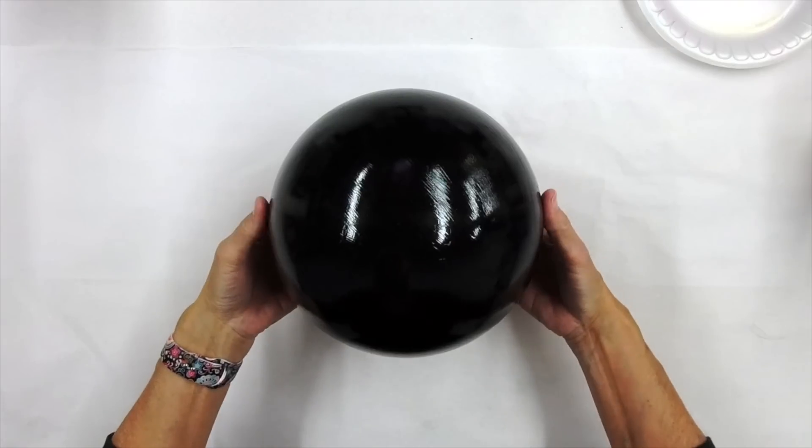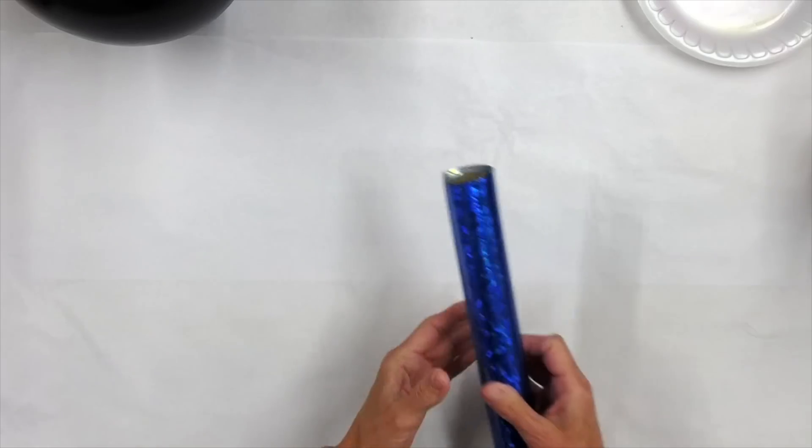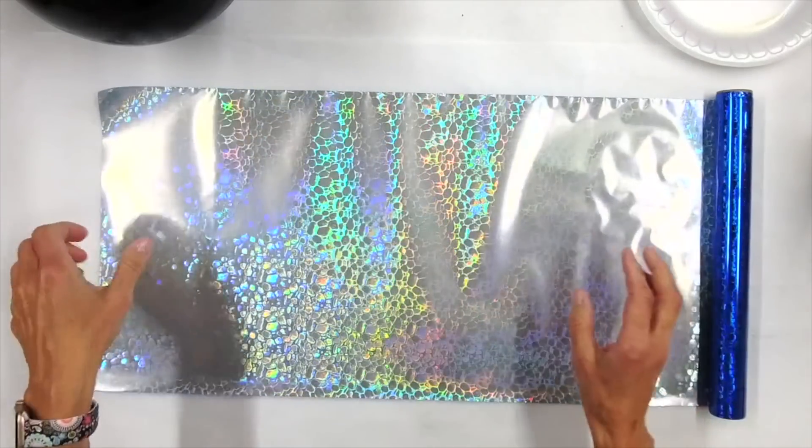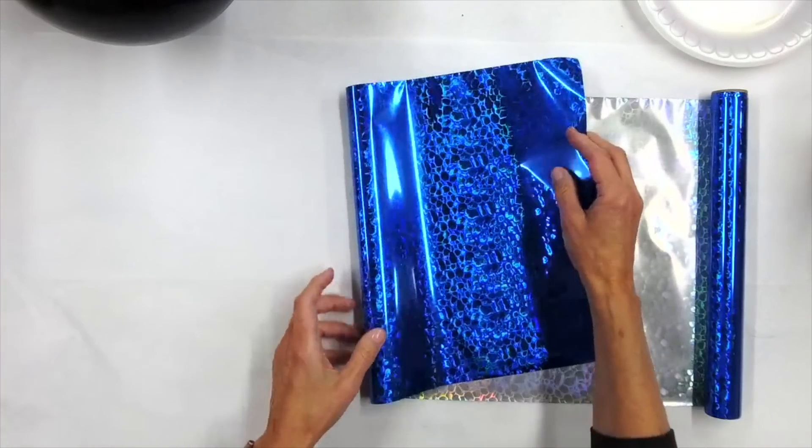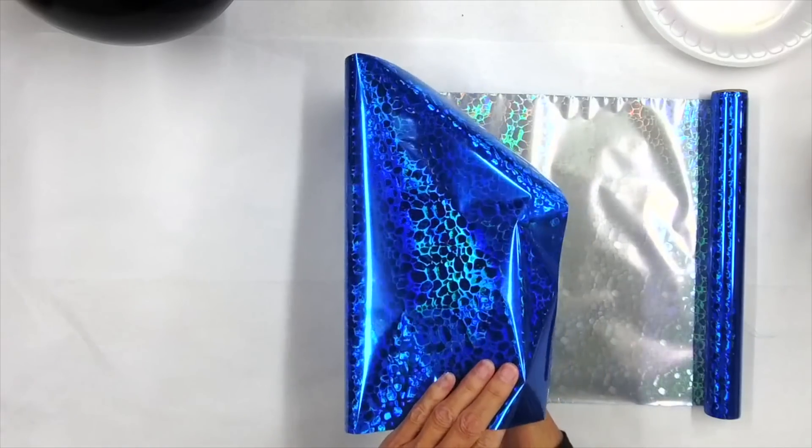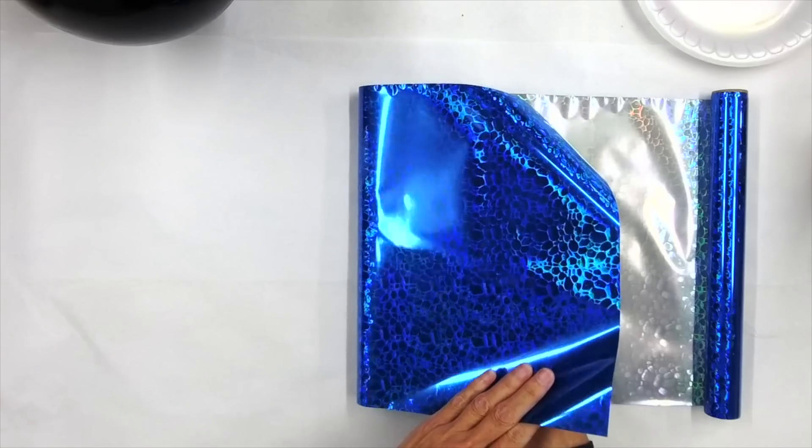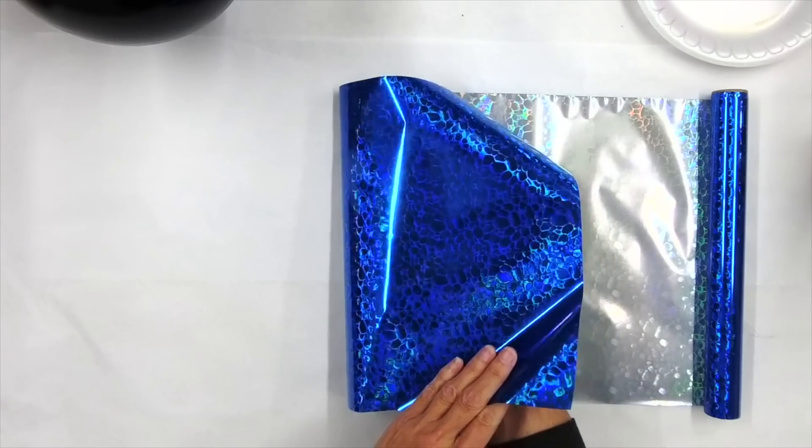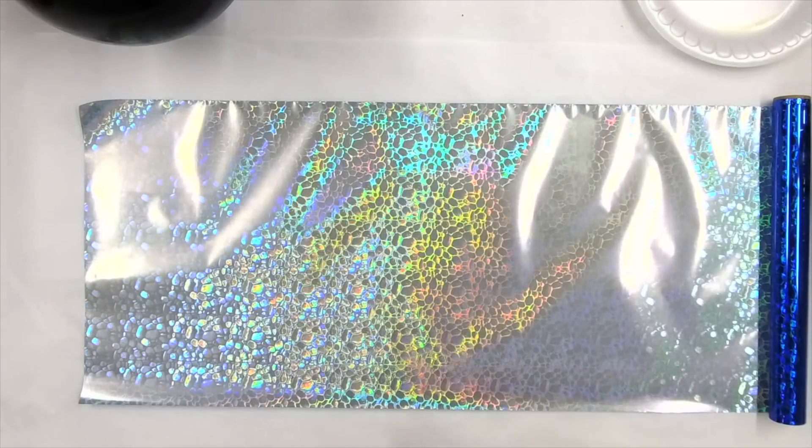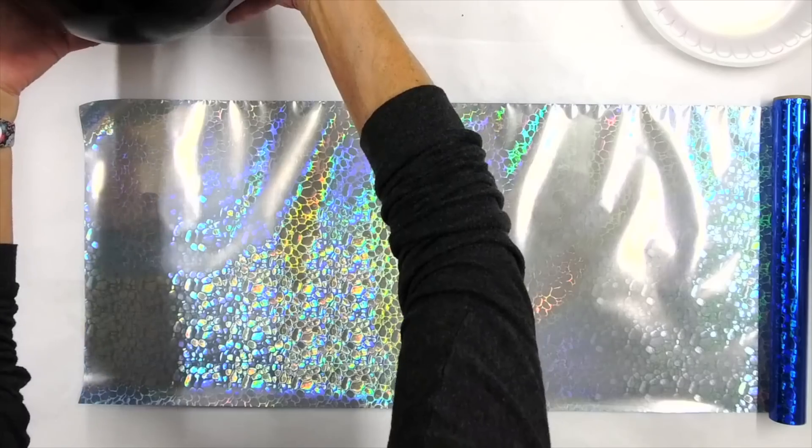So I'm going to move this bowling ball out of the way, which is nice and heavy. And we're going to grab our foil that we're going to use, which is our blue pebbles. And this is so stunning. It is a holographic foil. And I think this will just make the most beautiful gazing ball.